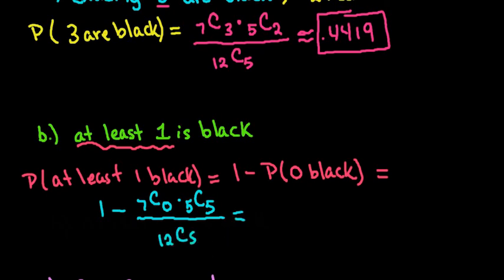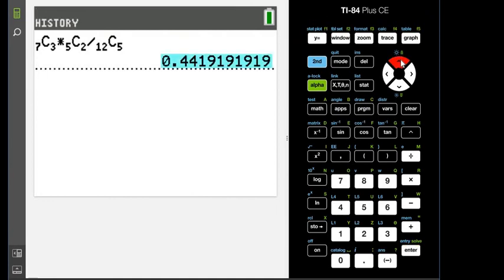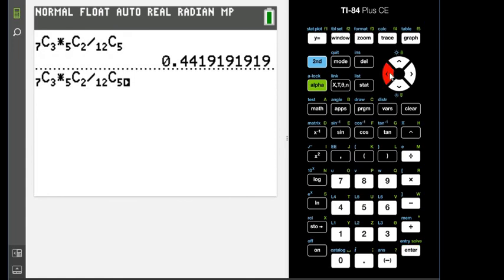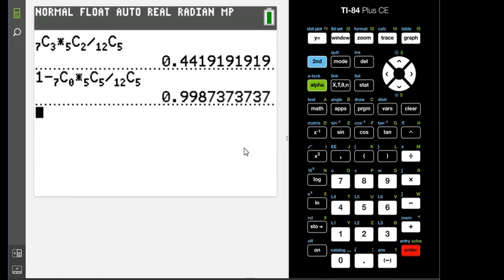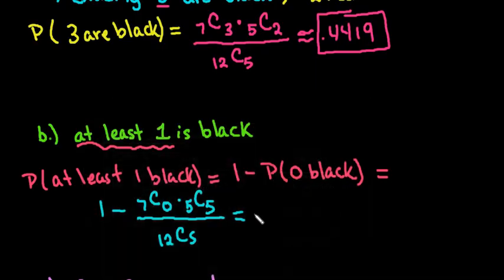So for this, what you can do so that you don't have to go back and re-grab everything, is I can just grab this part right here. I forgot to do the 1 minus first, so I'm going to hit 2nd and insert and do 1 minus. And then I'm going to change this value to 0, and the 5C2 I'm going to change that to 5 and then hit enter. And we see that it's 0.9987.